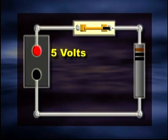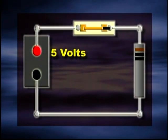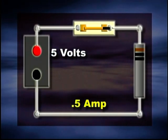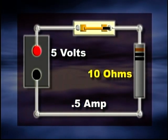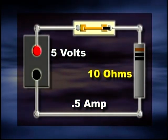The most important concept in electricity is how voltage, current, and resistance are related to each other. In this circuit drawing, the power source is 5 volts. The current is 1/2 ampere and the resistance in the circuit is 10 ohms.